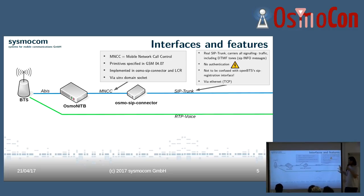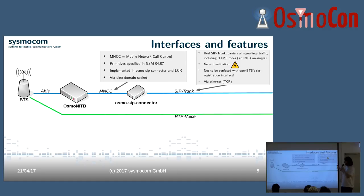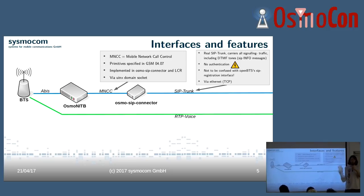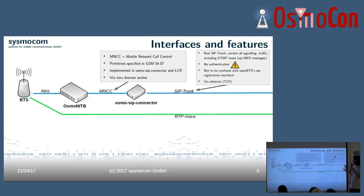At the output, we have a real SIP trunk that carries all the signaling traffic, including DTMF tones. There's something special about DTMF tone handling: the osmo-sip-connector is only connected inside the signaling traffic — it doesn't even see the RTP voice. So if you want to inject or handle DTMF tones, you'd look at them in the RTP stream. Instead, it uses SIP INFO messages, which is standardized by an RFC from Kaplan.